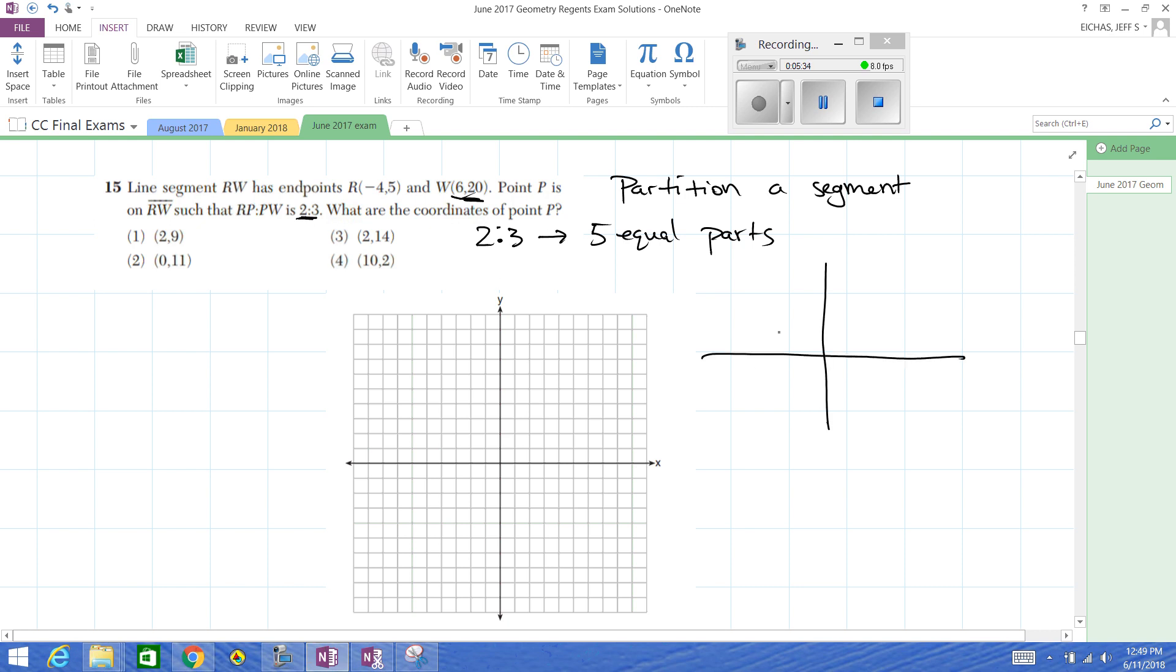R at negative four, five, we'll say is estimated right around there. Now, six, twenty is going to be way up here off the chart. That's going to be W. Now what we want to do is we want to split this up into six equal parts. The first thing I would do is finish off the right triangle. And I would consider a change in X and a change in Y. How far is it? Well, a change in X, if you go from negative four to six, that's ten spaces. From five to twenty is fifteen spaces.